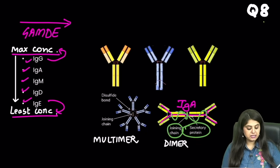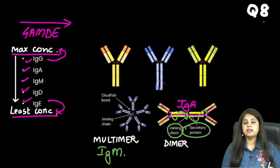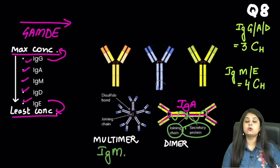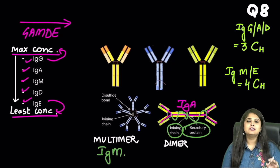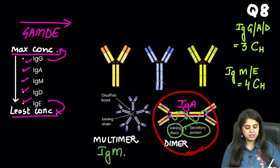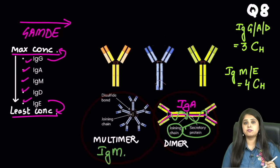If the image shows something multimeric, that is the classical IgM. For FMG students, please remember: dimeric is IgA and multimeric is IgM. For NEAT PG students, you need to read the constant region of the heavy chain to identify the other immunoglobulins.